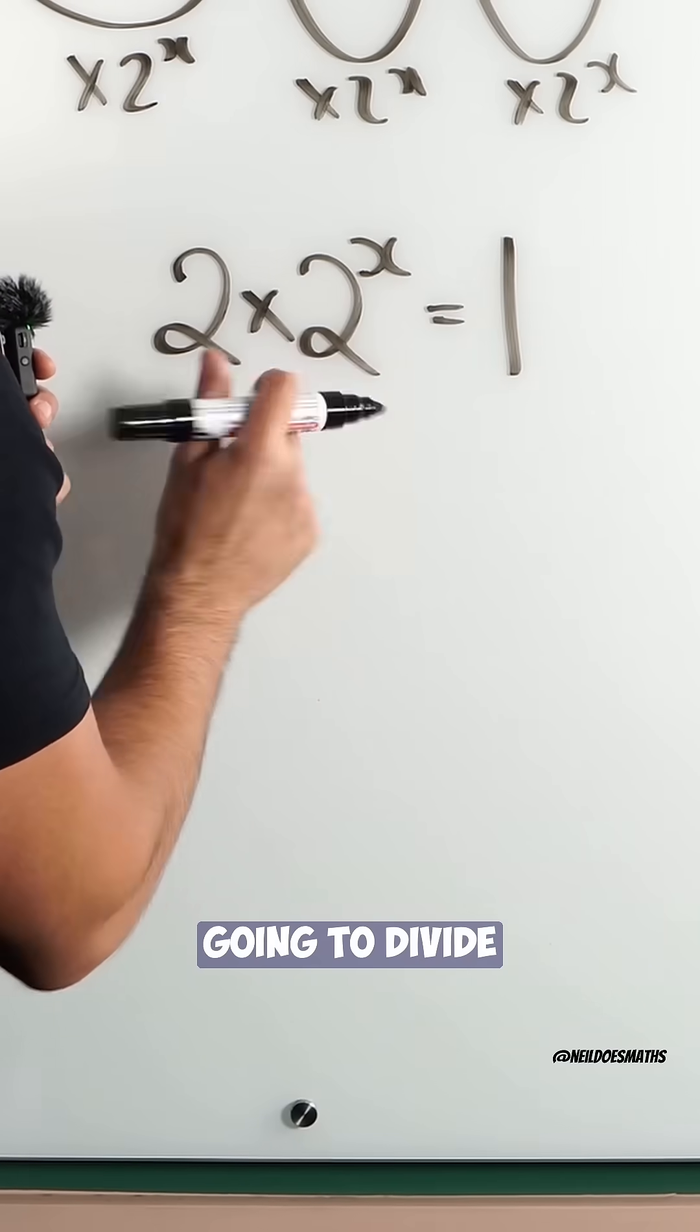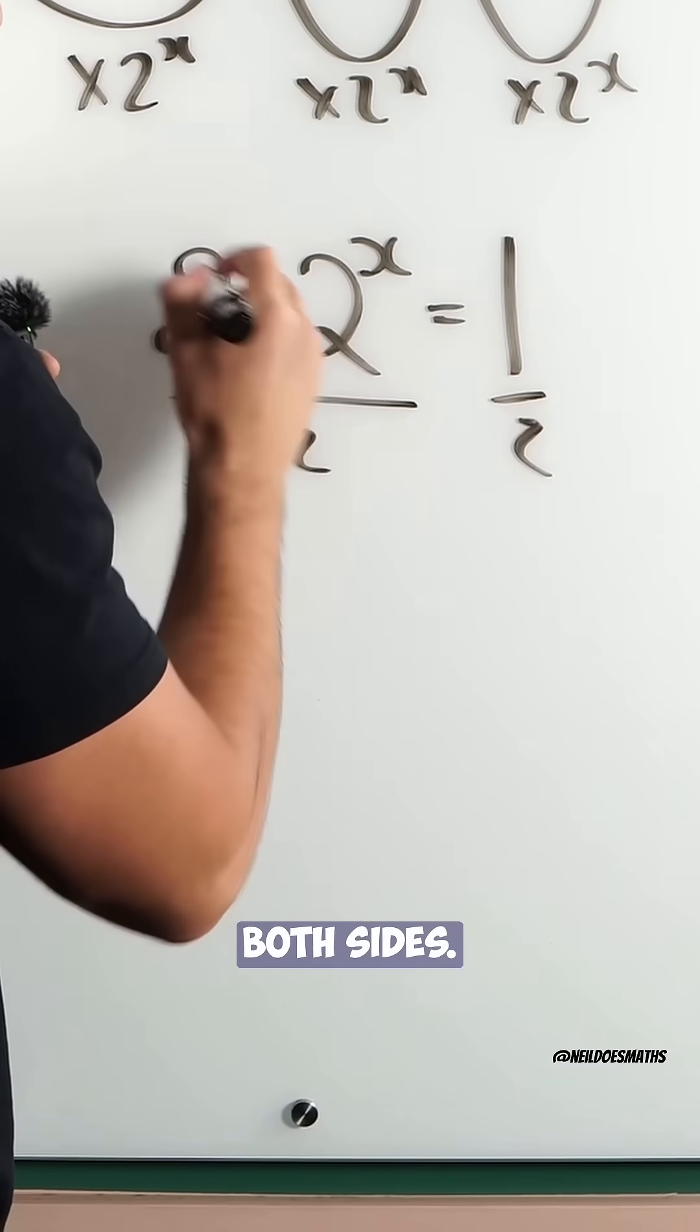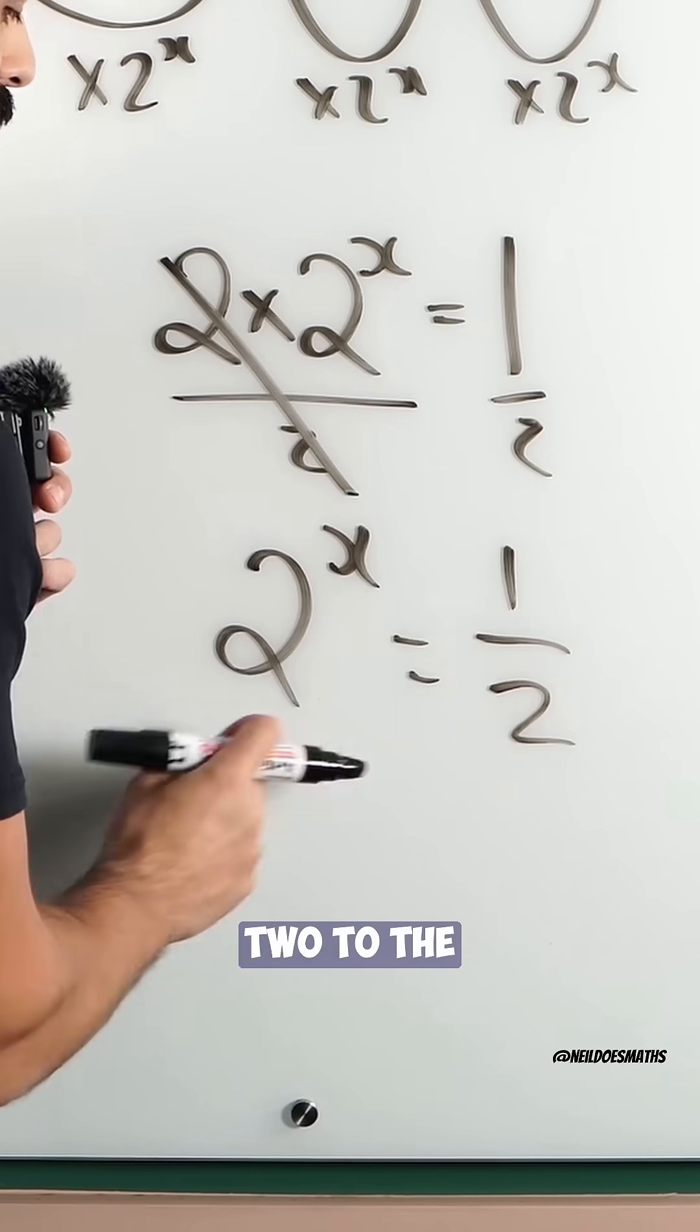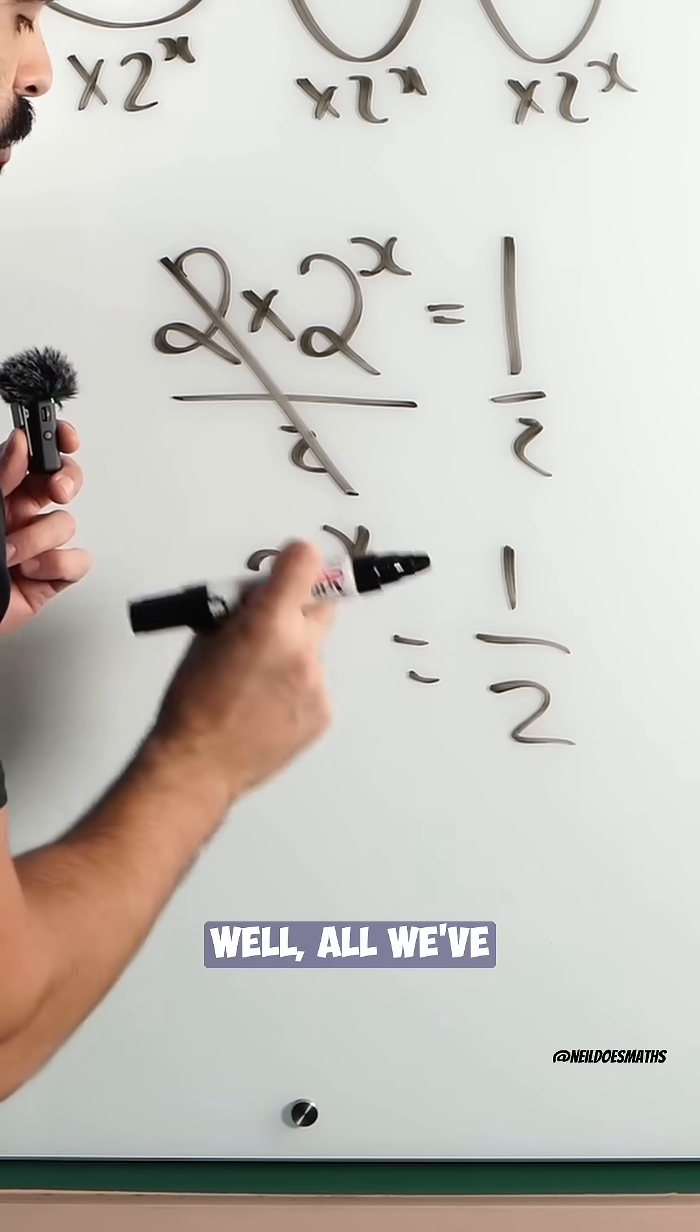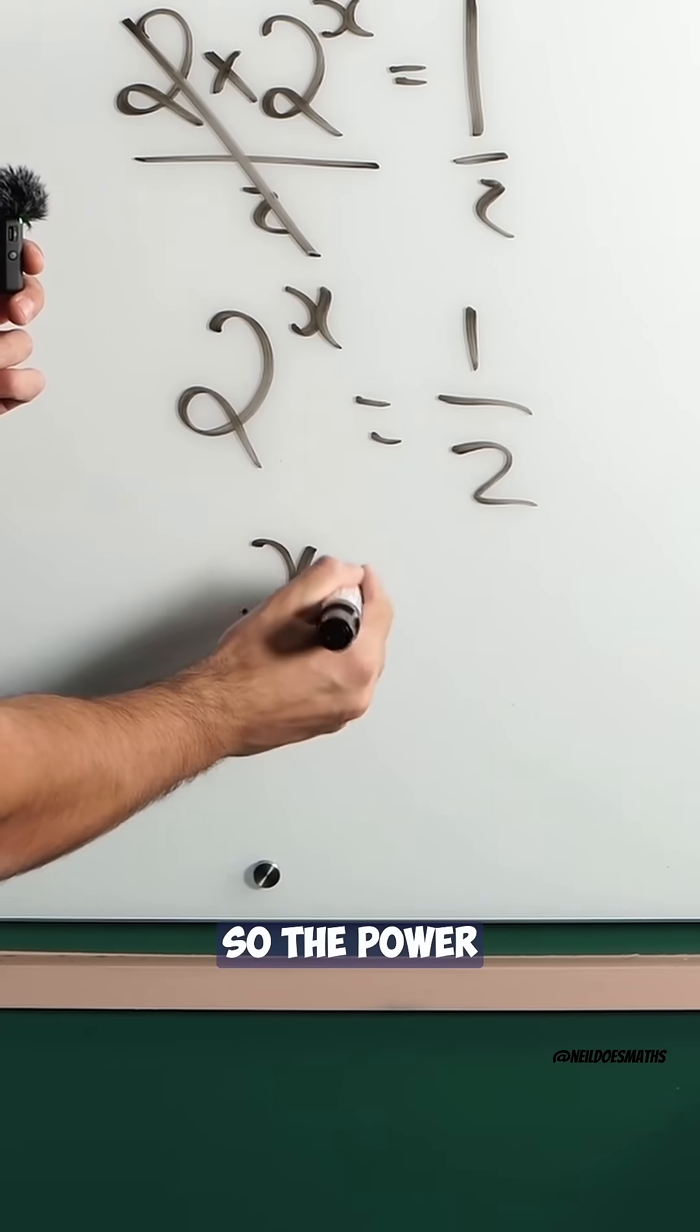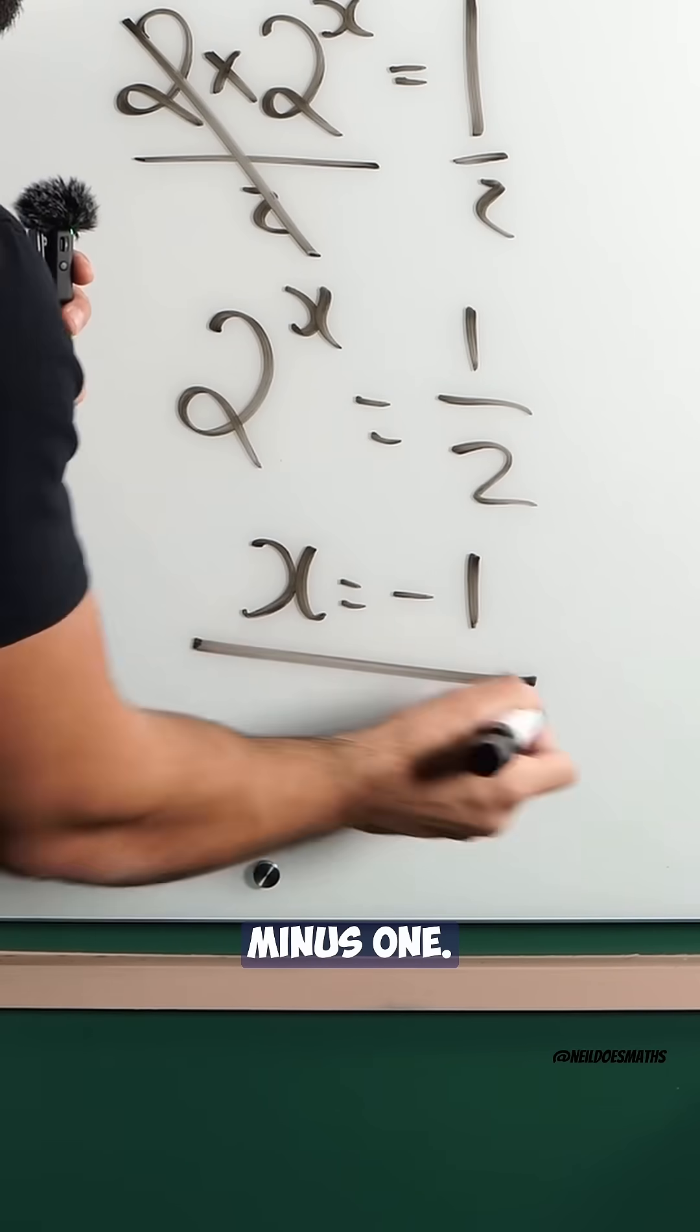So to rearrange for x, we're going to divide by 2 on both sides. Cancel. 2 to the power of x is 1 half. 2 to the power of what is 1 half? Well, all we've done is reciprocated the number 2. So the power needs to be minus 1.